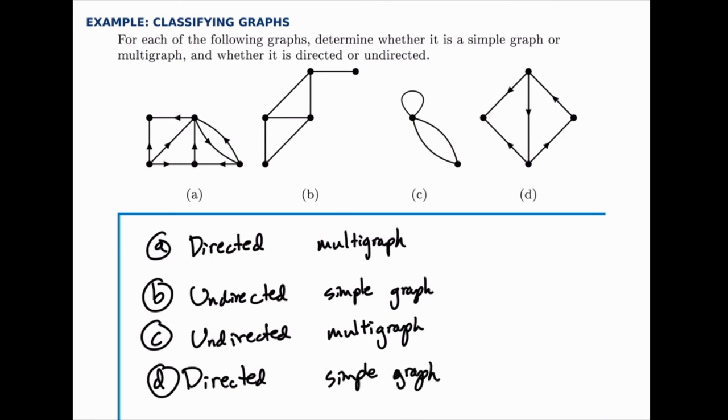So we have an example of each of the four types, directed and undirected, multigraph and simple graph. We have all four combinations in one example that we can compare to one another.